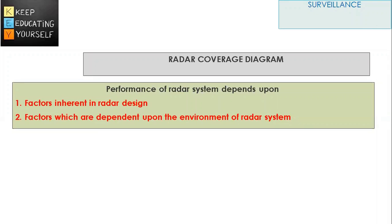A radar coverage diagram is a general indication of the performance of a specific radar system. It will indicate the limits within which the radar system may be used. The performance of a radar system depends upon factors inherent in radar design, or factors which are dependent upon the environment of the radar system.